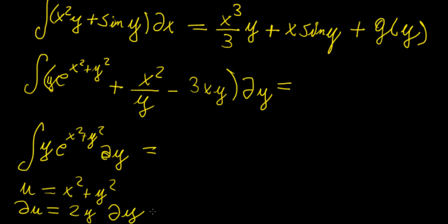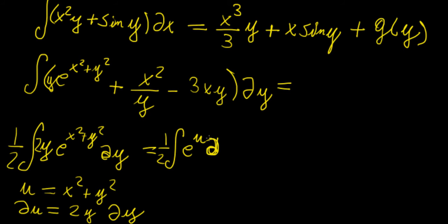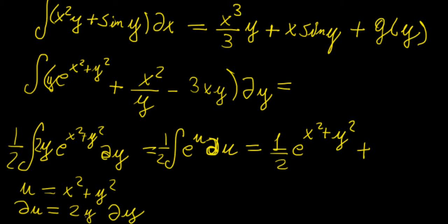Carrying through the substitution, we can write ½·e^u·∂u, which integrates to ½·e^(x²+y²). And if we differentiate this result with respect to y, we get a 2y from the exponent, the 2 cancels with the ½, leaving y·e^(x²+y²) — confirming we get back the original first term. So the contribution from the first term is ½·e^(x²+y²), plus some function of x, which we call g(x).